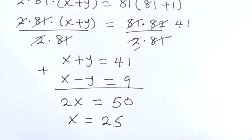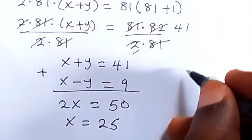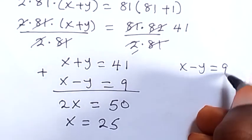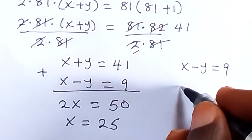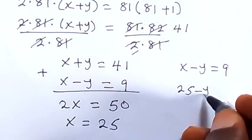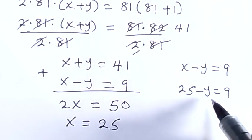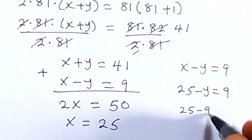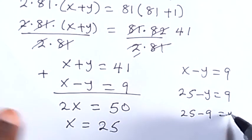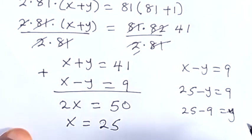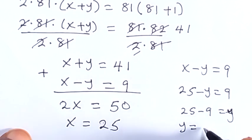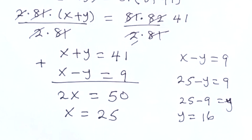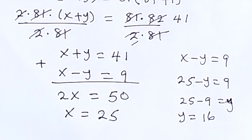Since x equals 25, using the second equation x minus y equals 9, we can replace x with 25. So 25 minus y equals 9. Taking y to one side and 9 to the other: 25 minus 9 equals y. That means y equals 16. So we got y to be 16 and x to be 25.